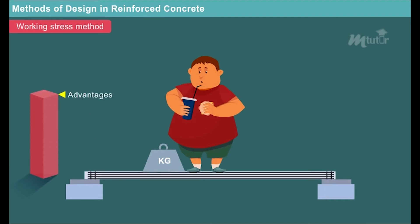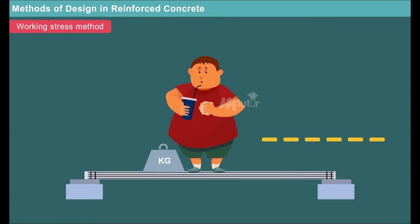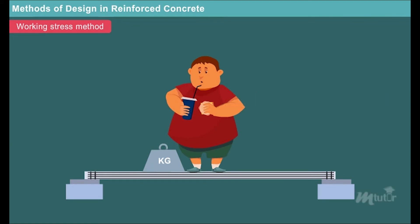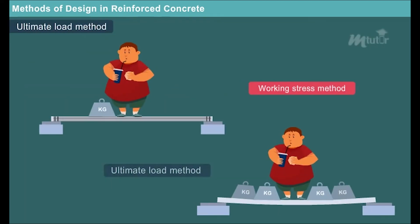Even though it has many advantages, there are few disadvantages too, which include: the modular ratio design results in a large percentage of compression steel which is not economical. This method neither shows the real strength nor the true factor of safety of the structure under failure. Let us move on to the next method, the ultimate load method, which was developed to overcome the discrepancies in the working stress method.